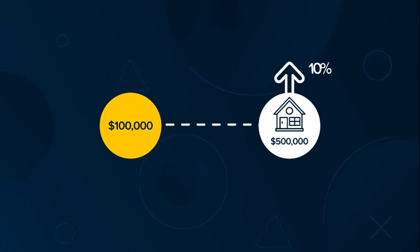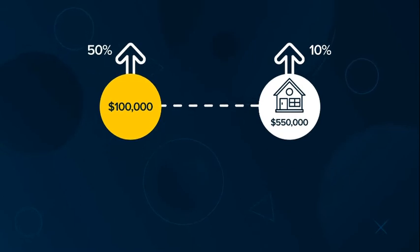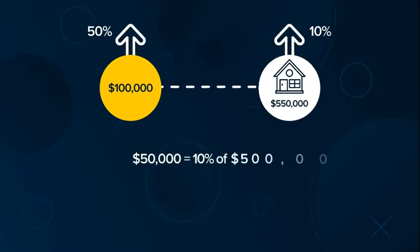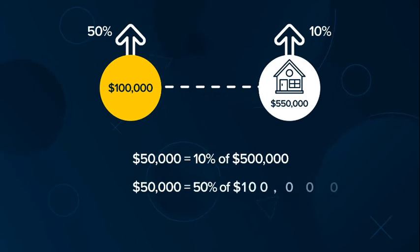If the home's value increases 10% to $550,000, your gains would be magnified to 50%. That's because an increase of $50,000 is only 10% of the home's value, but is a 50% increase on your investment of $100,000.